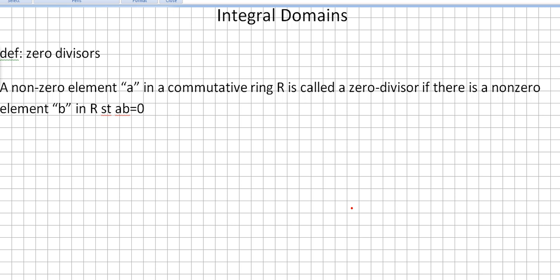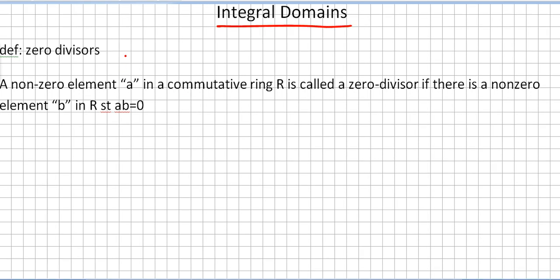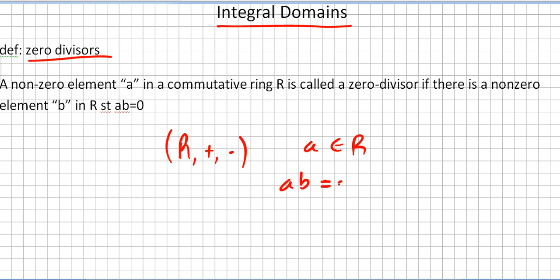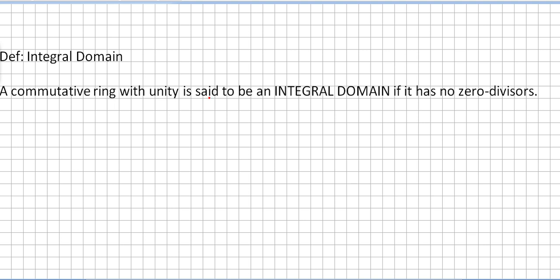After rings, we will be talking about integral domains, and we begin directly with the concept of zero divisors. A non-zero element A in a commutative ring R is called a zero divisor if there is a non-zero element B in R such that AB equals zero.